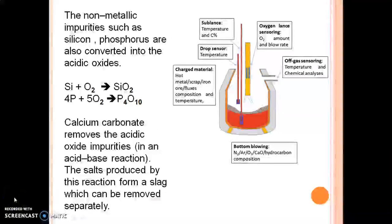The amount of carbon present in the steel is controlled by the percentage of oxygen blown. Calcium carbonate can also be used to remove the acidic impurities.